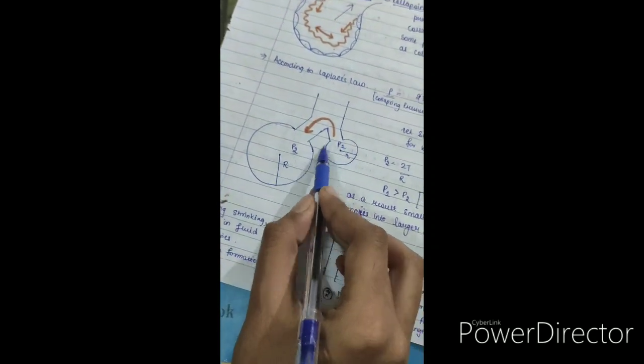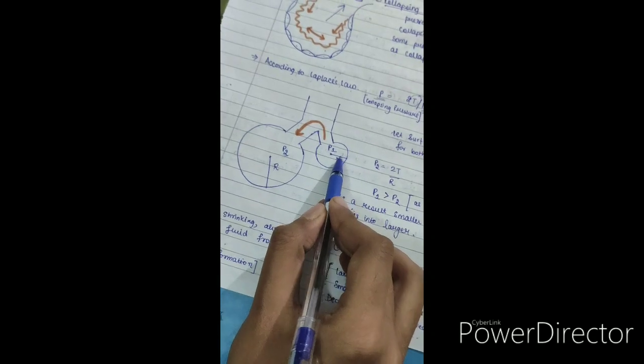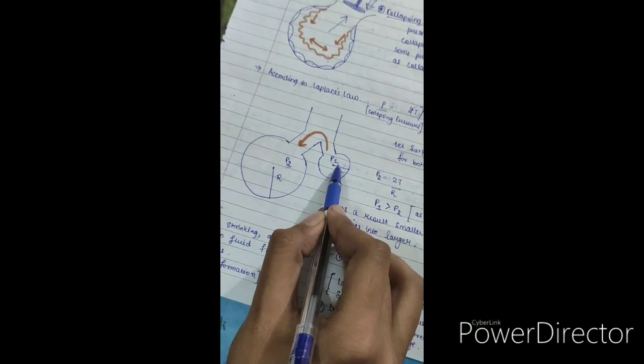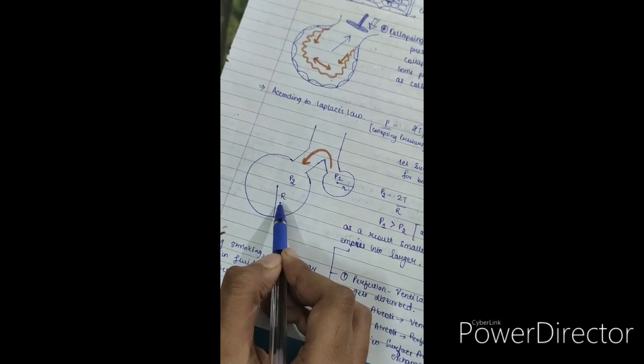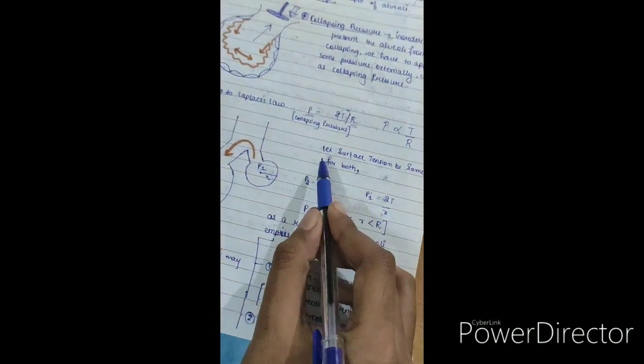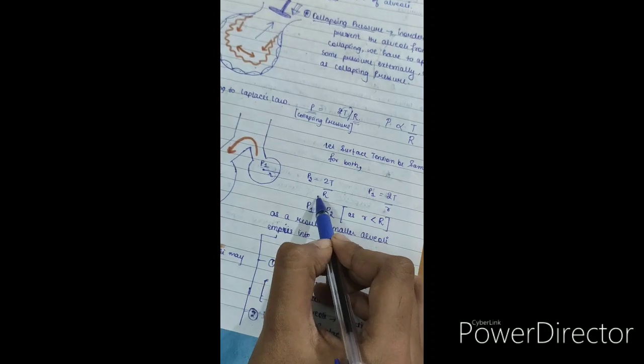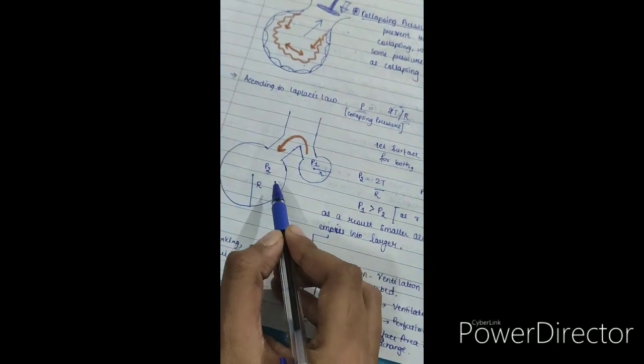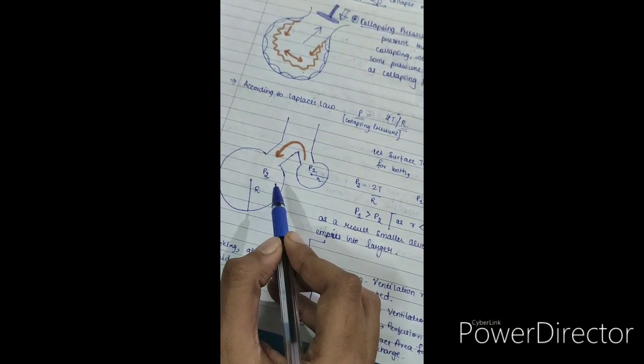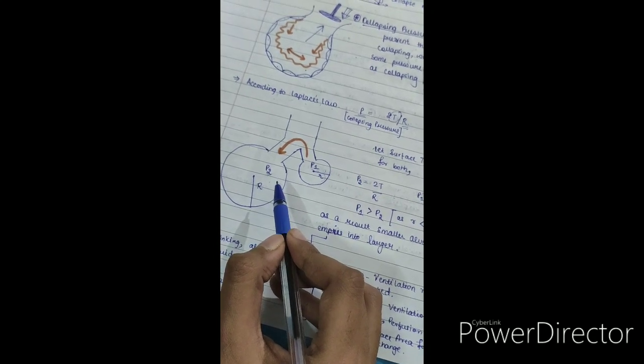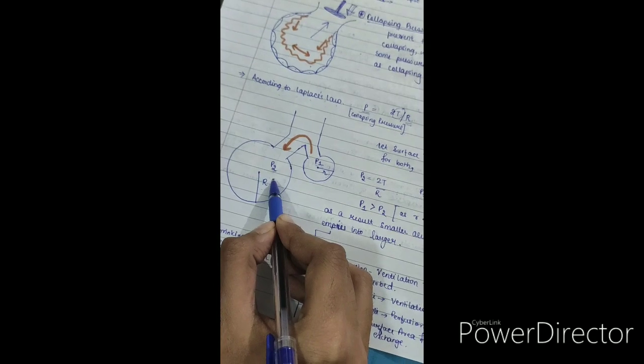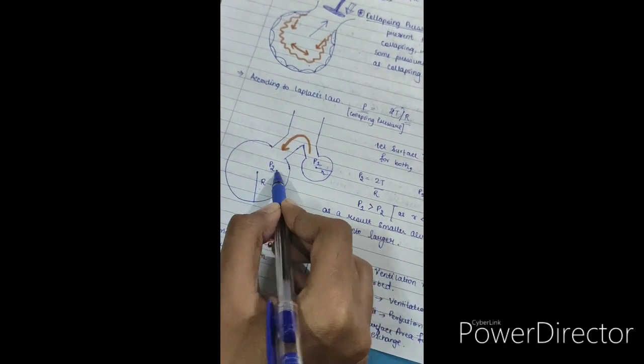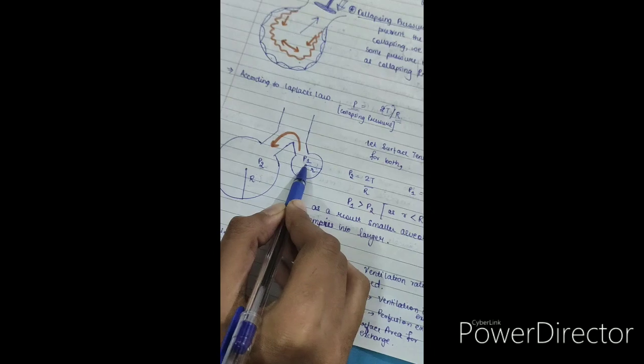I have considered the smaller alveoli with a radius of small r and the pressure in this is P1, while P2 is the pressure for the larger alveoli with a radius of capital R. According to Laplace law, if I apply then I see that the larger alveoli, in case we are considering the surface tension to be same, because the radius is large for the larger alveoli, therefore pressure decreases. That means P2 is lesser than P1.